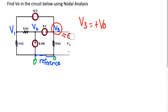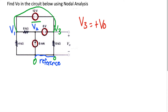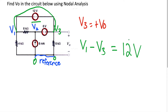Let's solve for V3. The first equation we can write right away: if we connect the V1 node to the V3 node, there's a 12-volt source in between. We always do positive end minus negative end equal to the voltage in the middle. The positive end is V1 and the negative end is V3, so V1 minus V3 equals 12 volts. That is equation one.